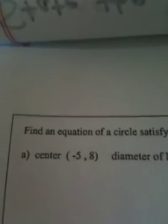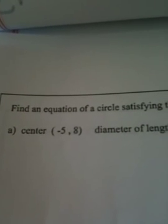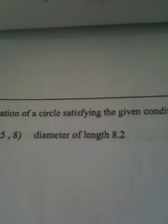Okay, the next question asks us to find an equation of a circle satisfying the given conditions. The first thing they want us to do, part A, is the center is negative 5, 8 and the diameter has a length of 8.2.